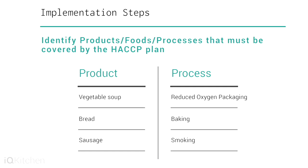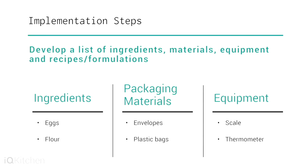Task two: identify products, foods, and processes that must be covered by the HACCP plan. The HACCP team should write a categorization of the types of potentially hazardous foods that are covered. Task three: develop a list of ingredients, materials, equipment, and recipe formulations. Review everything that shows methods and control measures that address the food safety concerns involved.